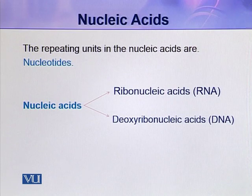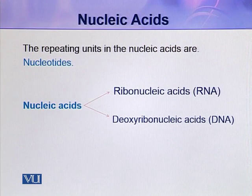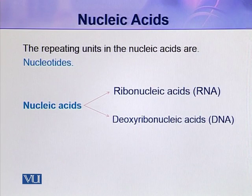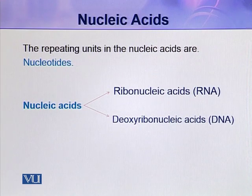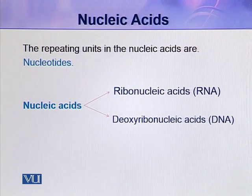Similarly, the nucleotide sequence of mRNA is dictated by the nucleotide sequence of DNA. A segment of DNA which is responsible for the synthesis or production of a functional product — either mRNA or a protein — is called a gene. There are thousands of genes in an organism, so the DNA molecule contains thousands of genes, making it a very long molecule.